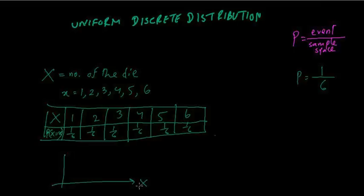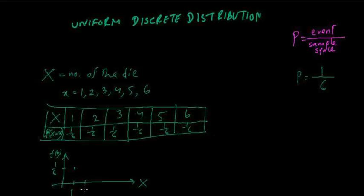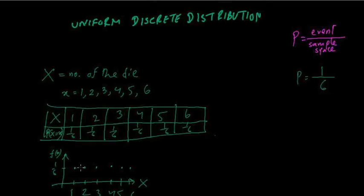If you plot this, the x-axis is the random variable and the y-axis is the probability distribution function f. For each value 1 through 6, the probability is 1/6, so all the points line up at the same height — like a straight line. Every probability is equal; it's absolutely uniform.